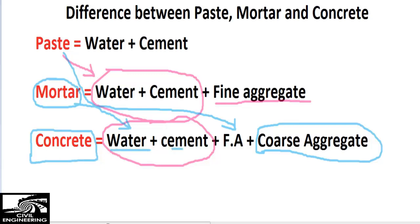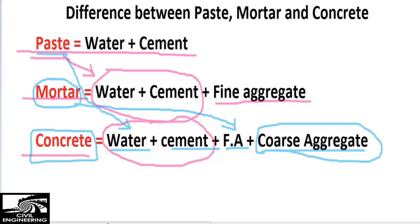These are the most commonly used materials in daily construction projects: paste, mortar, and concrete. Paste comprises only cement and water. Mortar is water plus cement plus fine aggregate. And concrete is water plus cement plus fine aggregate plus coarse aggregate. This is the major difference between these three.